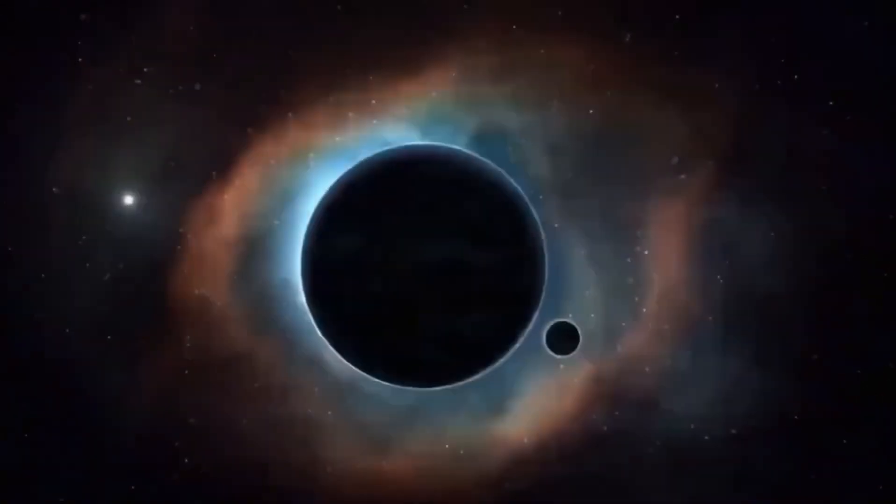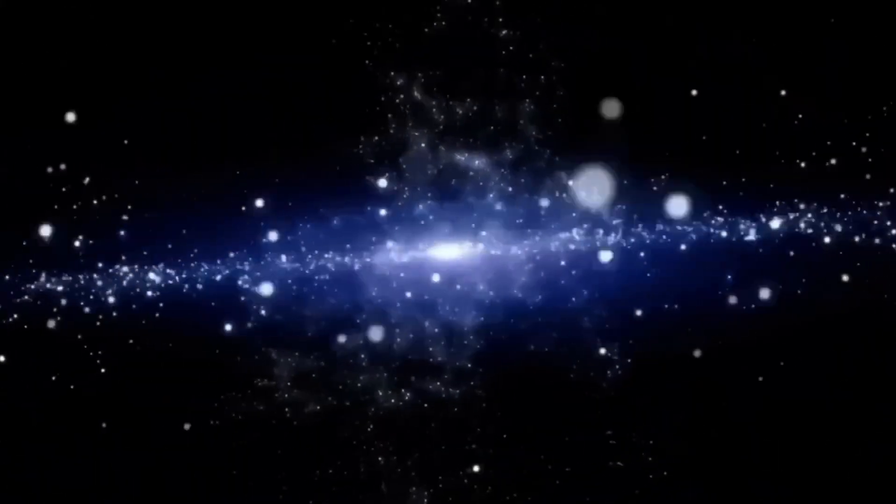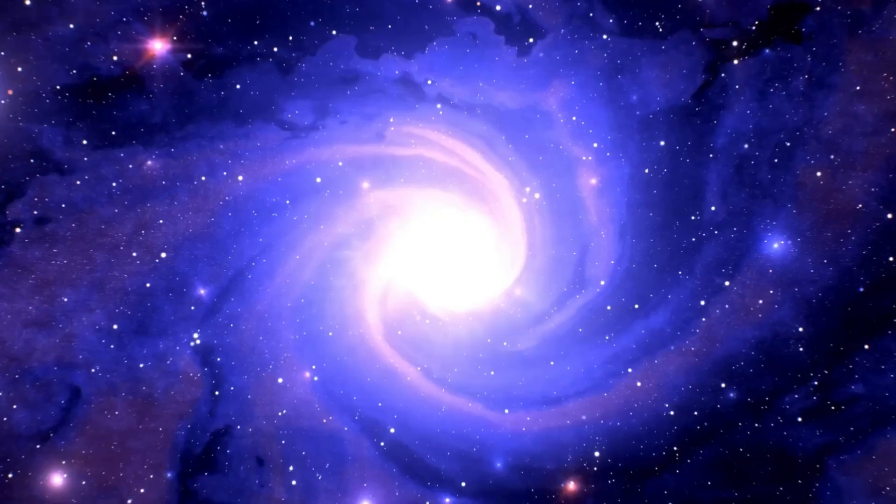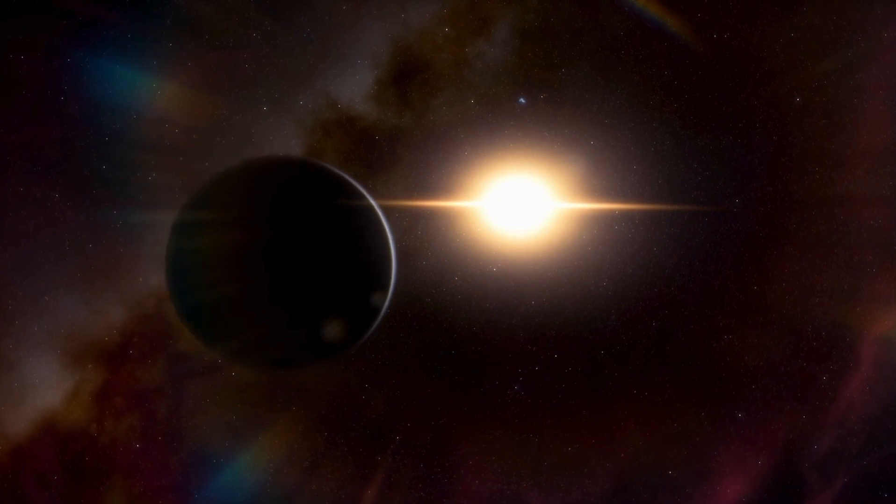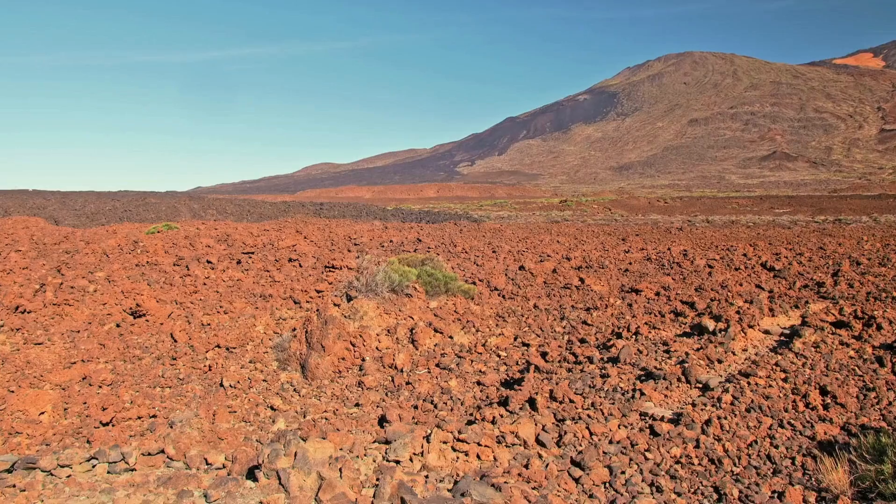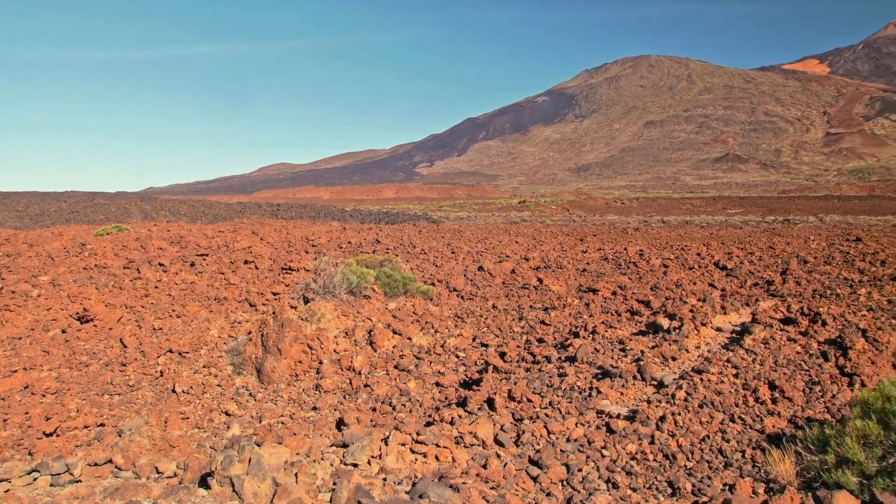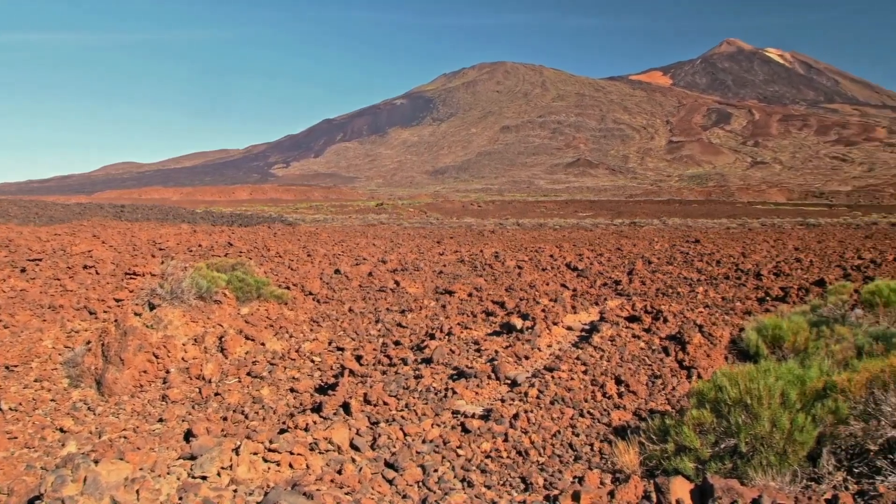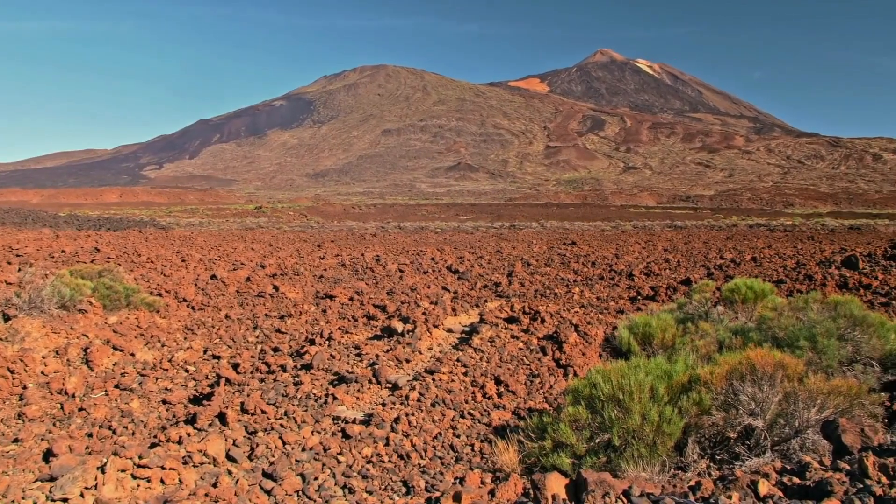As we venture beyond our own solar system, we discover a whole new world of exoplanets, planets that orbit stars other than the Sun. With 206 trillion stars in the universe, the possibilities of exoplanets are endless. Some exoplanets even roam free, untethered to any star, like rogue travelers in space.